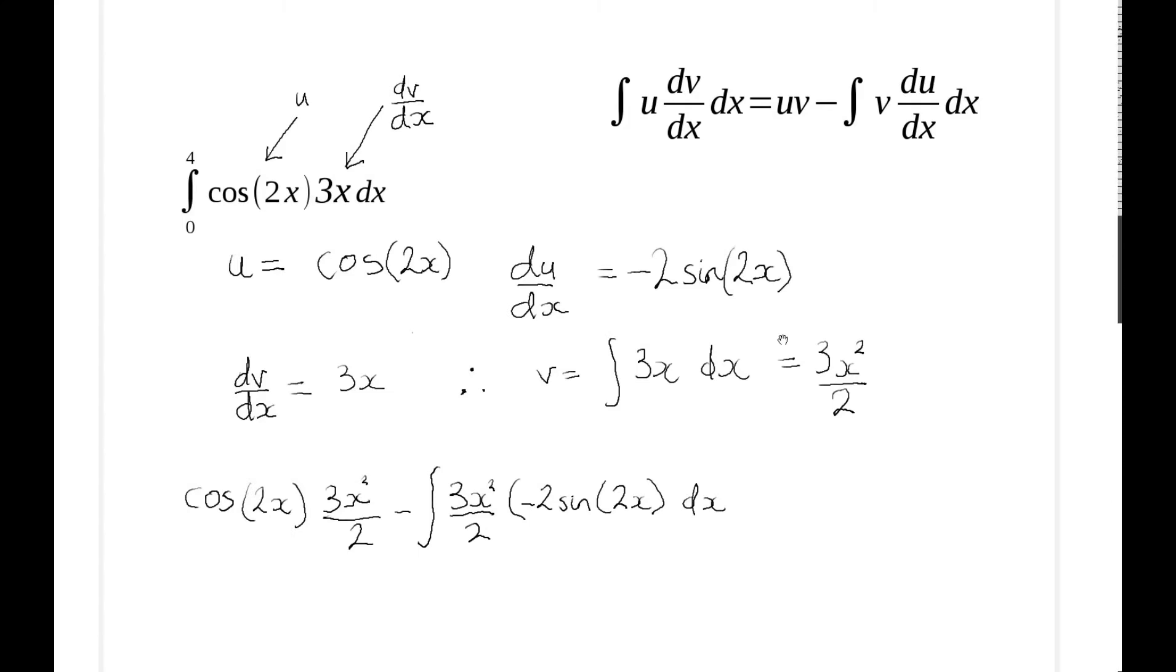Here we see an example. I've got cosine 2x times 3x, and I've just designated the first term as being the u and the second one being the dv/dx so that I can insert it into this formula.